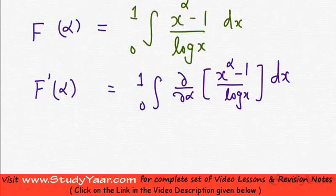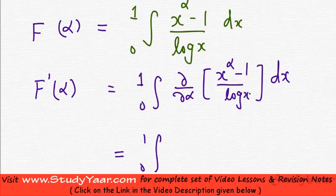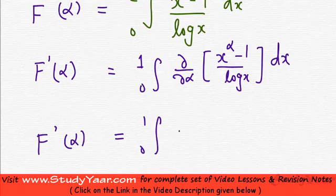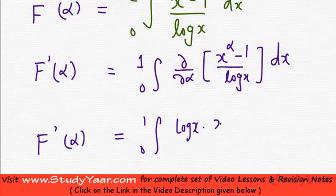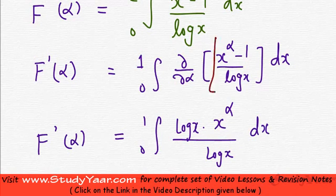So we differentiate (x^alpha - 1) / log(x) with respect to alpha, treating x as a constant. The partial derivative with respect to alpha gives log(x) times x^alpha divided by log(x).